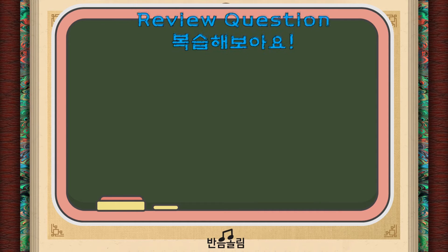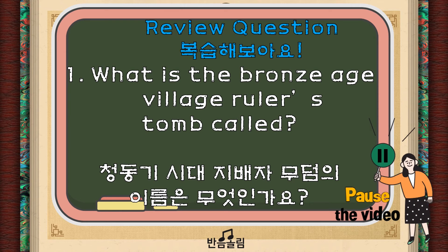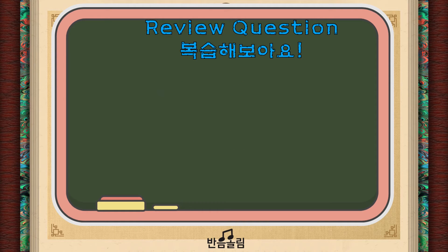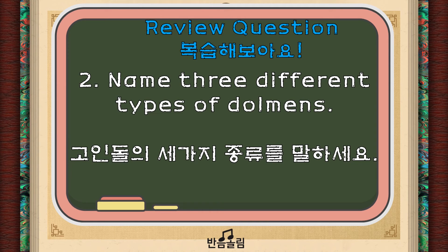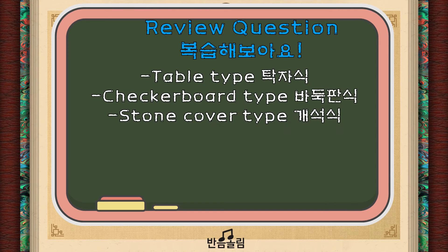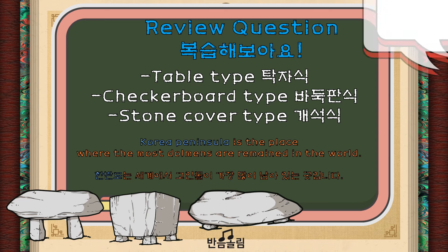Let's review with questions. Number one: what is the village ruler's tomb in the Bronze Age called? It is Dolmen. Number two: name three different types of dolmens. The three types of dolmens are: one, Table-type Dolmen; two, Checkerboard-type Dolmen; and the last one is Stone Covered-type Dolmen.